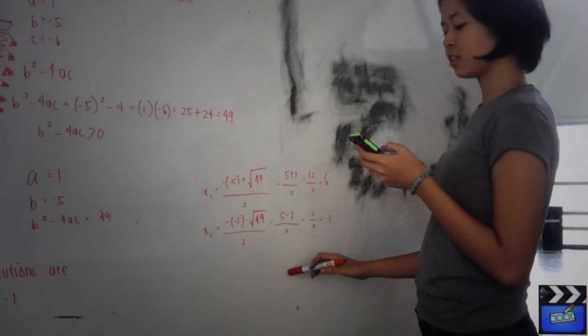Using the quadratic formula with the discriminant equal to 49, the exact solutions are x equals 6 and x equals negative 1.